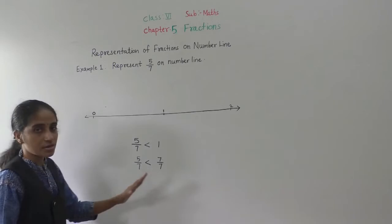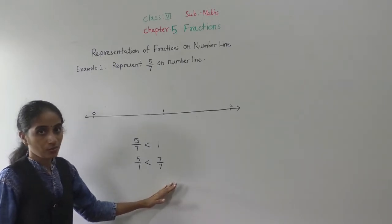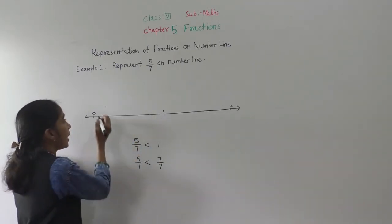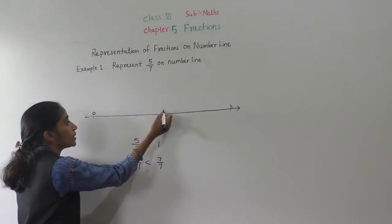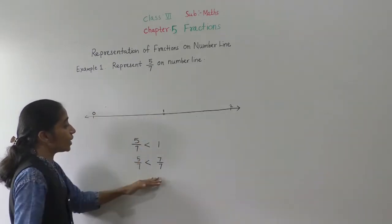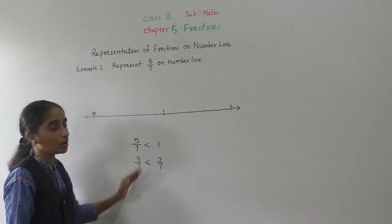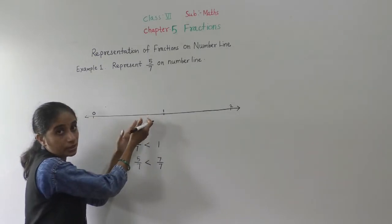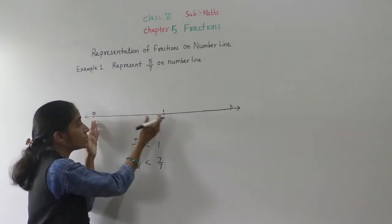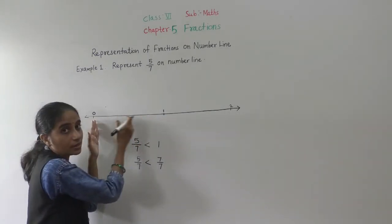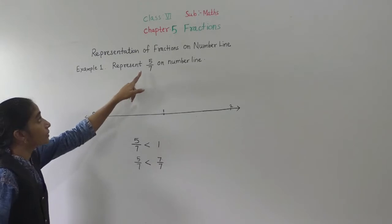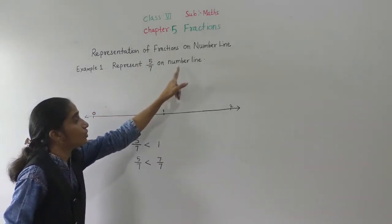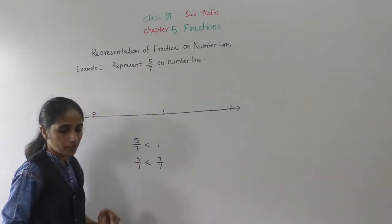So, 5 upon 7 is smaller than 1. I have represented 0 here and 1 is here. So where will 5 upon 7 be counted? Between 0 and 1 — in between this number line it will be counted.